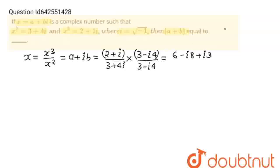And iota into minus iota 4, this will become minus iota square 4 and iota square is minus 1, minus into minus 1 will become plus 1 into 4 will be plus 4. So this will be plus 4 upon,